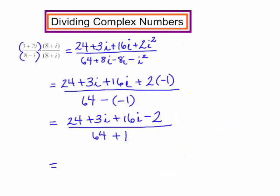In the numerator, I'm going to add the real parts. 24 and negative 2 will be 22. I will also add the imaginary parts, 3i and 16i. In the numerator, I have 22 plus 19i. In the denominator, 64 plus 1 is 65.